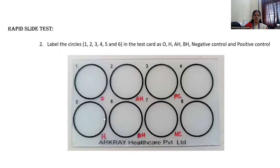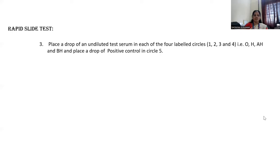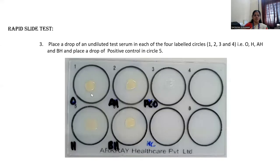Label the circles like this: O, H, AH, BH, positive control, negative control. Place a drop of undiluted serum in each of the four labeled circles 1, 2, 3, and 4 — that is O, H, AH, and BH — and place a drop of positive control in circle 5. The test serum sample should be placed in all four wells, and in the fifth well, the positive serum provided in the kit should be placed.